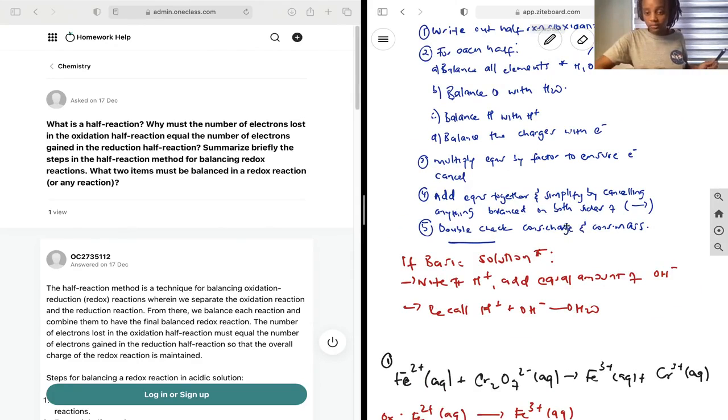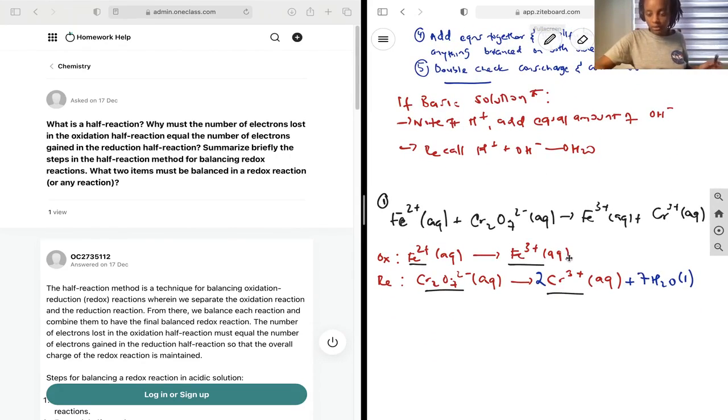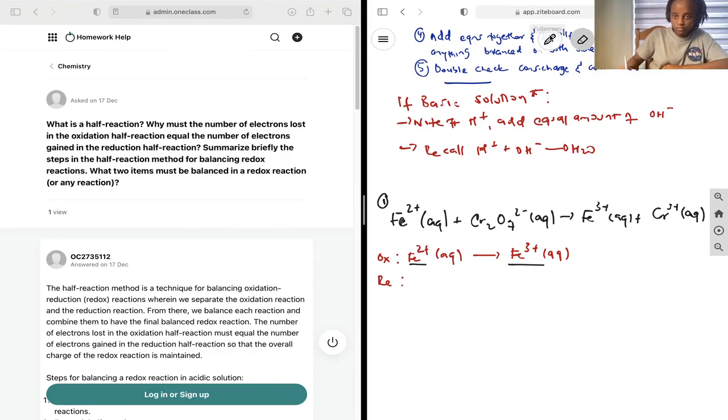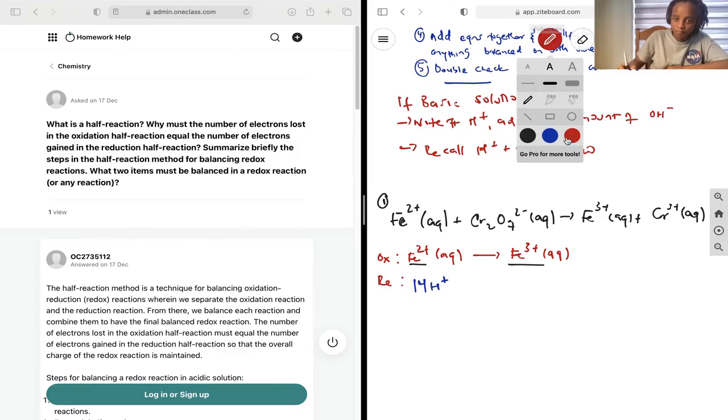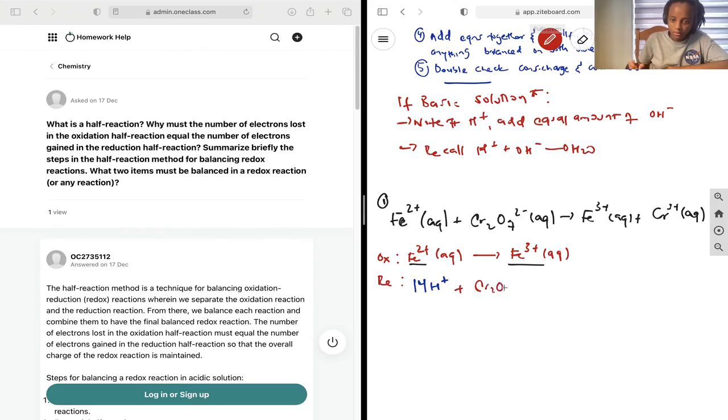Next, we balance H with H+. Here there's no hydrogen, but here we have now added 14 hydrogens that we will need to balance. Let's rewrite this. 14H+ plus Cr2O7^2- to get 2Cr3+ plus 7H2O.